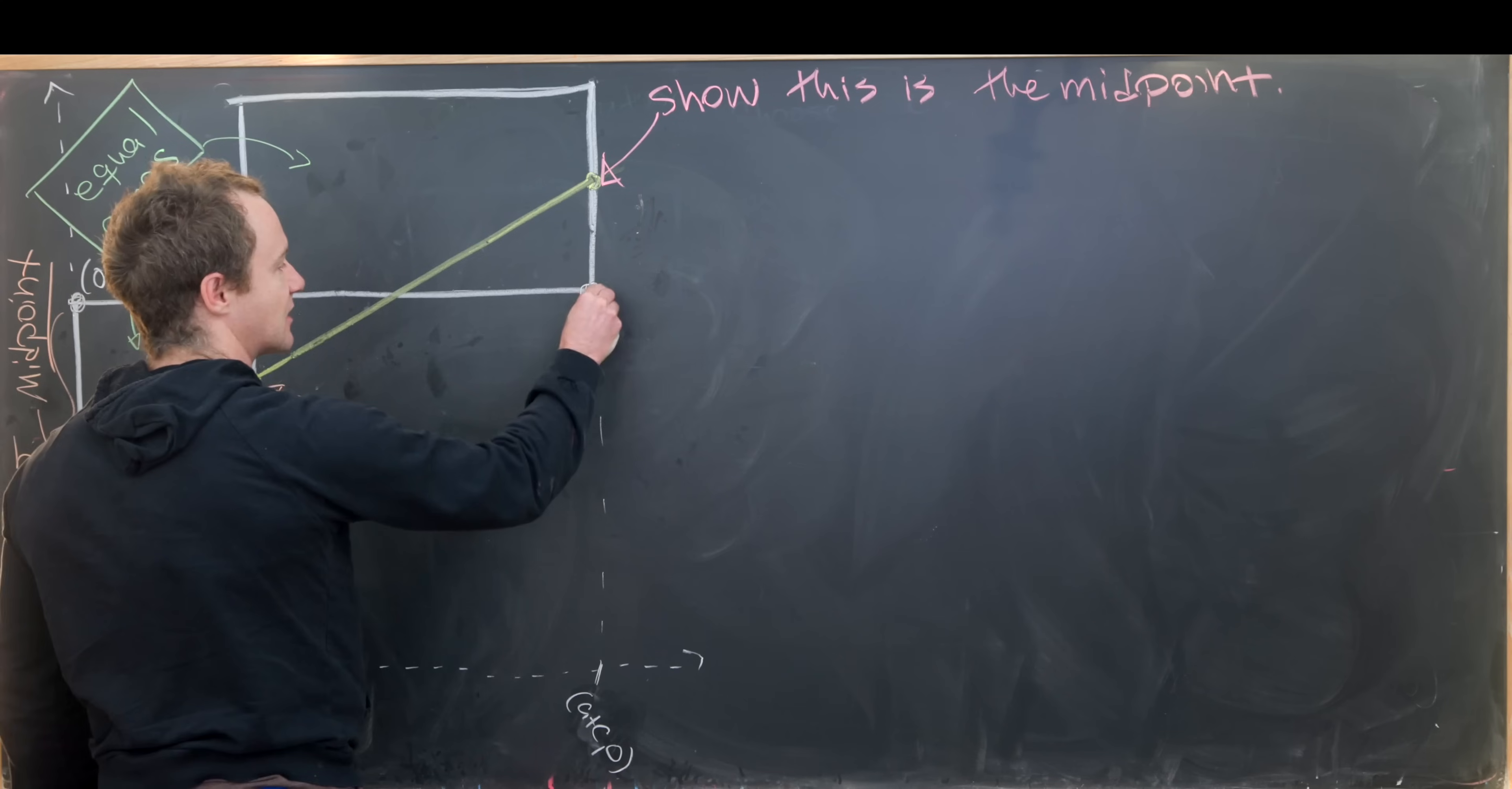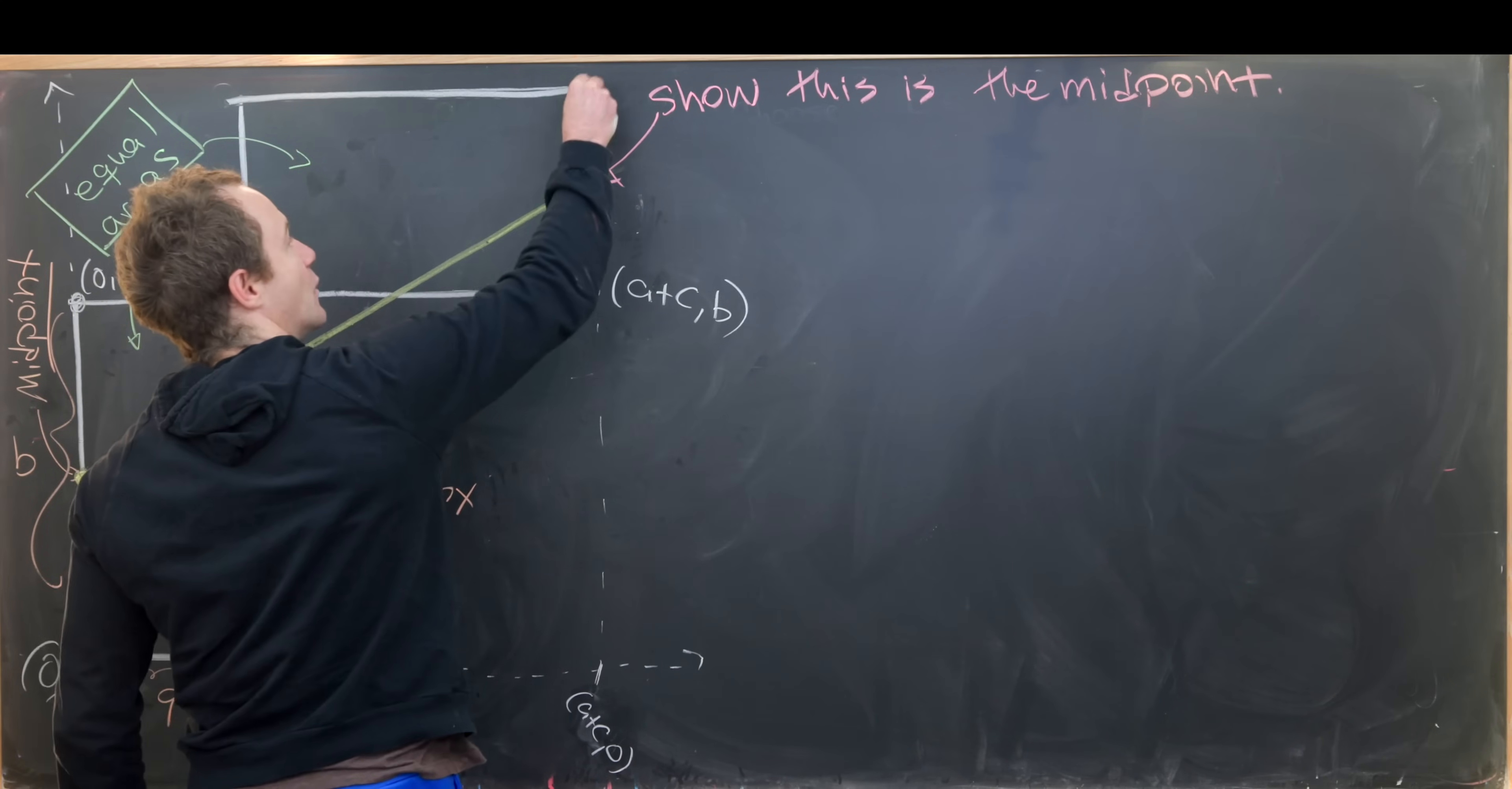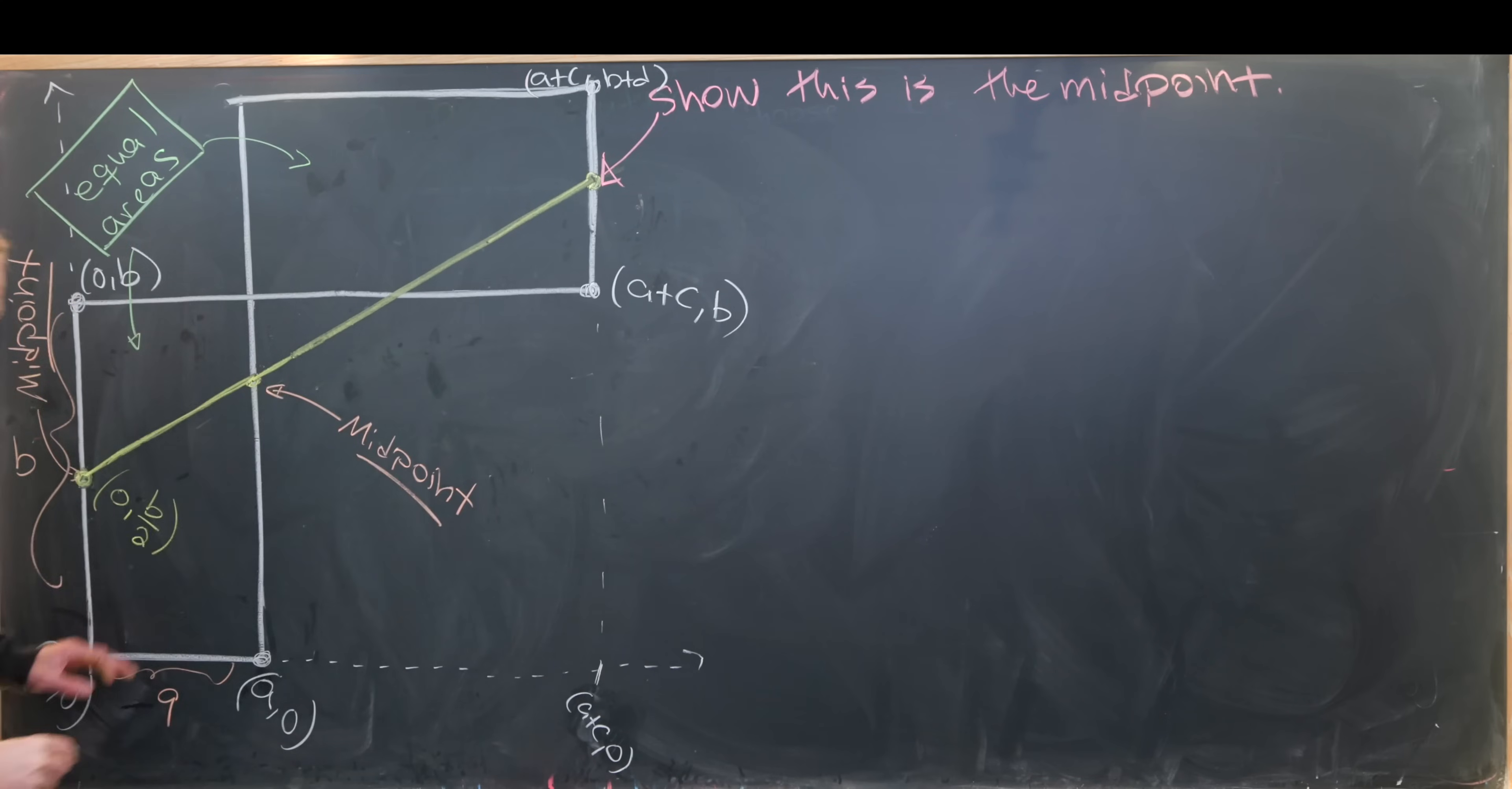Which means up here at the corner it's (a+c, b). And then way up here it's (a+c, b+d), because it's the two widths and the two heights.